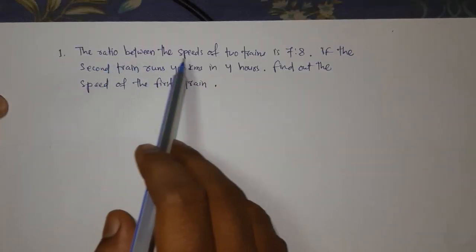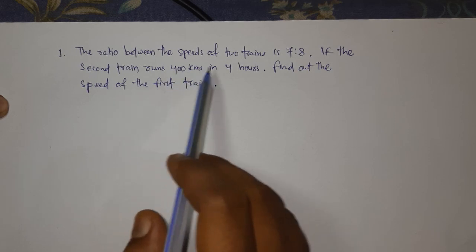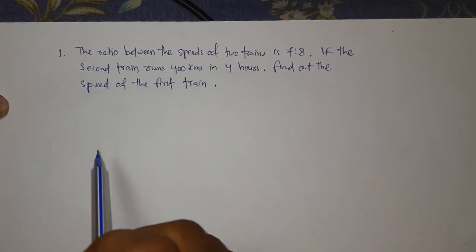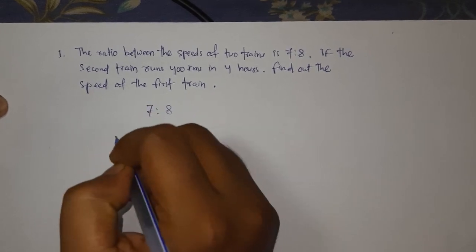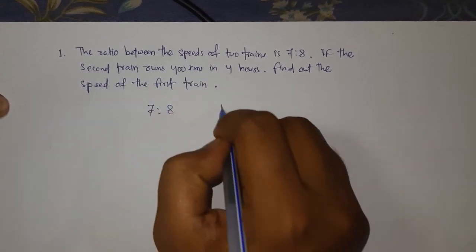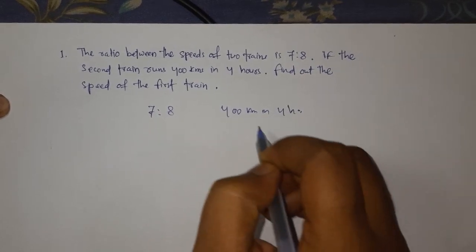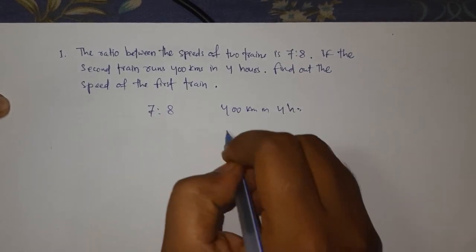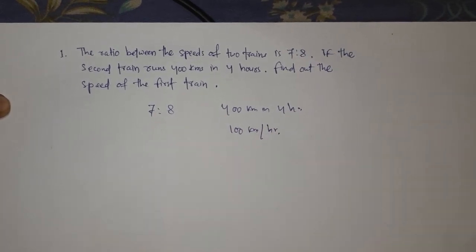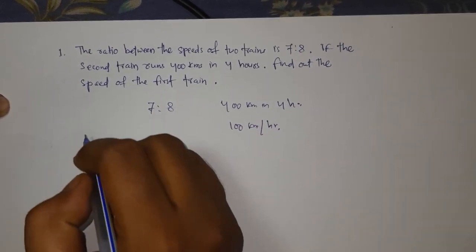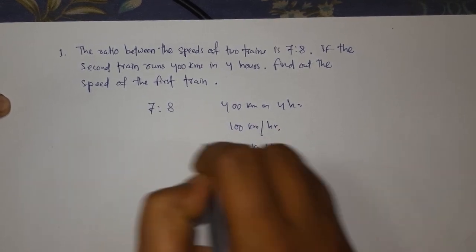First question: the ratio between the speed of two trains is 7 to 8. If the second train runs 400 km in 4 hours, find out the speed of the first train. The second train's speed is 400 km in 4 hours, which is 100 km per hour. Let the speed of the first train be x kilometers per hour.